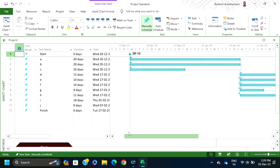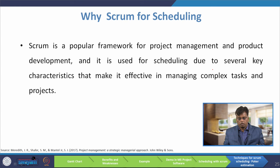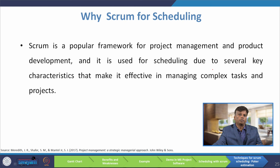The project is starting on December 20 and will be finished on February 27. Now we will discuss scheduling for an agile project. Why Scrum for scheduling? Scrum is a popular framework for project management and product development, used for scheduling due to several key characteristics that make it effective in managing complex tasks and projects.